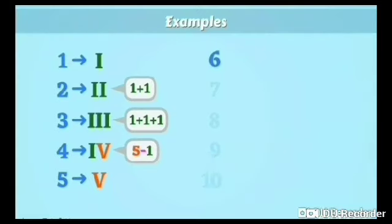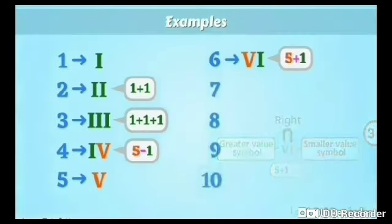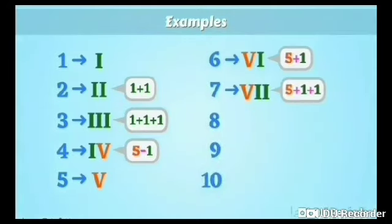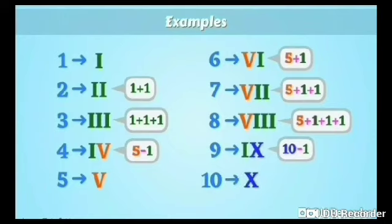Similarly, for writing 6, we will write V plus 1, VI. Writing towards right, we will add the given number. For 7, we will write V, I, I. For 8, we will write V, I, I, I. That means 5 plus 1 plus 1 plus 1. For 9, we will write 10 minus 1. And for 10, we will write X.